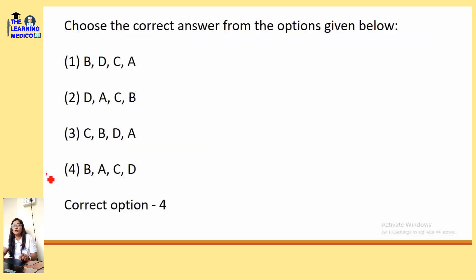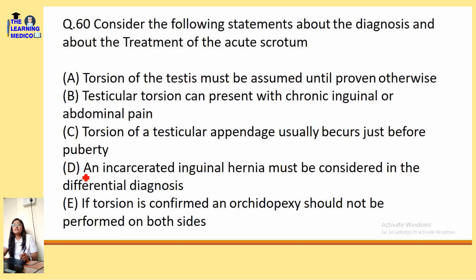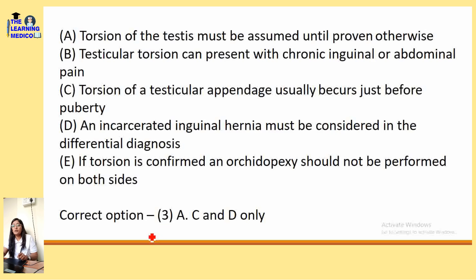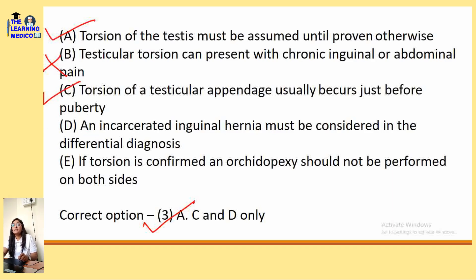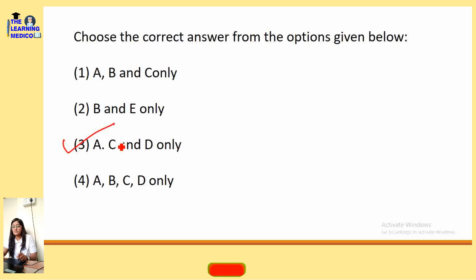Consider statements about diagnosis and treatment of acute scrotum. Torsion of the testes must be assumed until proven otherwise — correct. Testicular torsion can present with chronic inguinal or abdominal pain — wrong. Torsion of the testicular appendages usually begins just before puberty — correct. Incarcerated inguinal hernia must be considered in the differential diagnosis — correct. If torsion is confirmed, orchidopexy should not be performed on both sides — wrong. The correct option is option 3: A, C, and D.